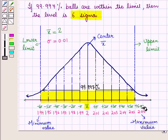X bar plus 6 sigma gives upper limit decided by the manufacturer, that is 2.06.